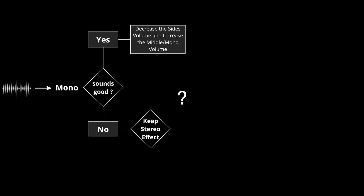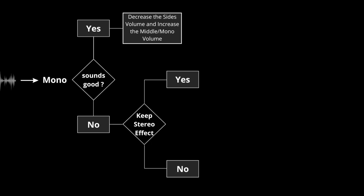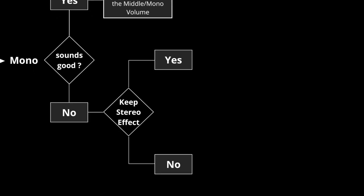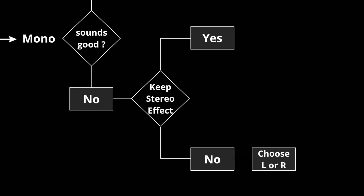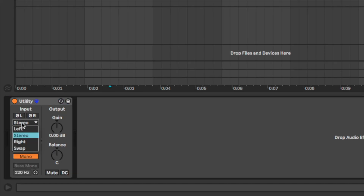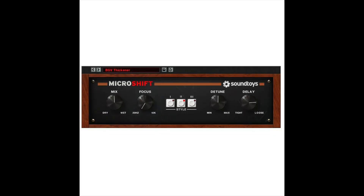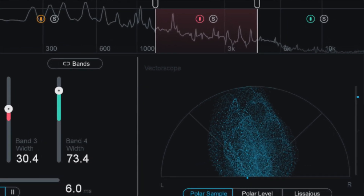If the mono sound sounds bad and robotic, we have two options: whether we want to keep the stereo effect or not. If we don't want to keep the stereo effect, it is easier because we will rebuild the stereo from scratch. We choose only one side — left or right — listen to each side and choose the best one you like most. This gives us the sound completely in mono, and then we can make it wider again using any plugin, always watching the vectorscope to keep the sound mono compatible.